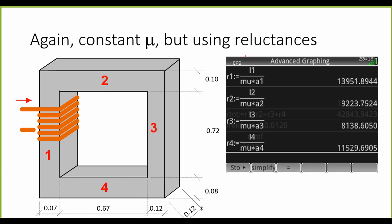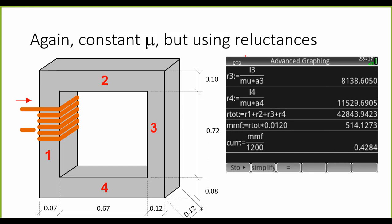Next, I put them in series, because those four reluctances are in series in the eyes of the magnetic flux that we want to establish in that circuit. That total reluctance multiplied by the flux, which is 12 milliwebers, gives us the magnetomotive force according to Ampere's law. With that and the number of turns 1200, we obtain the current, which is 0.4284 amperes, or 0.43 amperes.